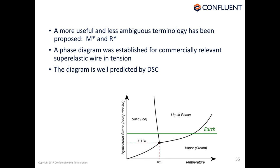In conclusion, what we're trying to do is introduce new terminology focused on the reversion of phases rather than the speculative formation of austenite. The phase diagram changes with texture and other modifications, but it conveys important points. Most importantly, DSC is a very effective way of predicting the phase diagram and therefore of predicting stress-strain curves as a function of temperature.